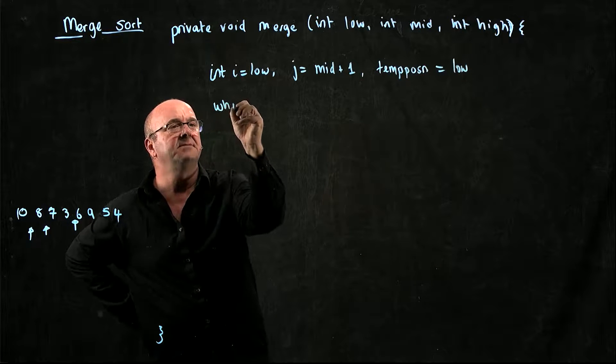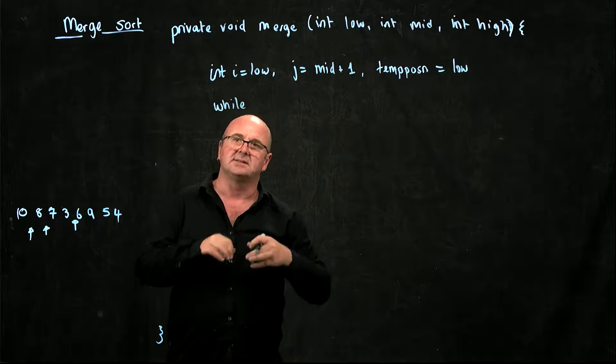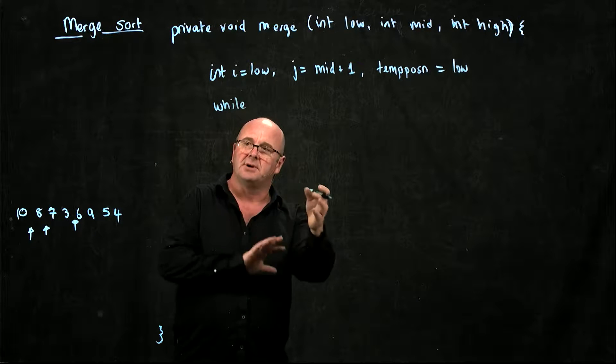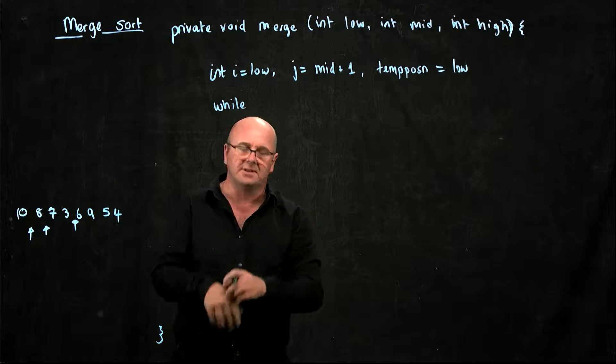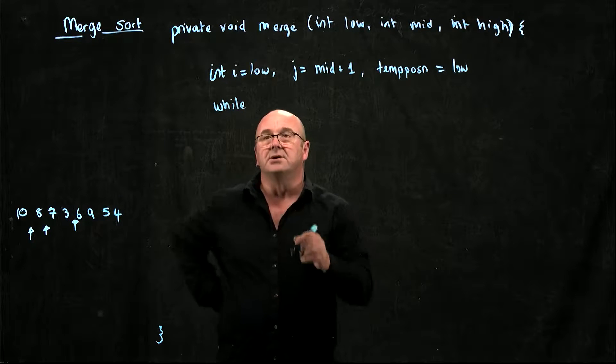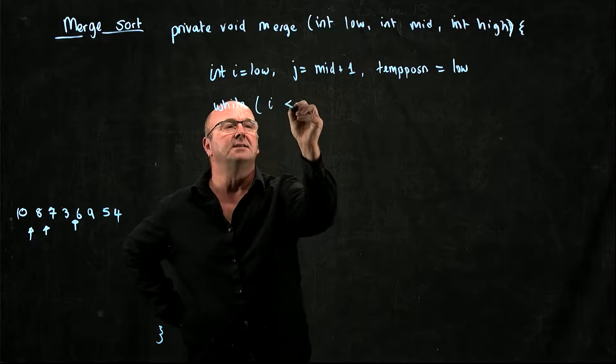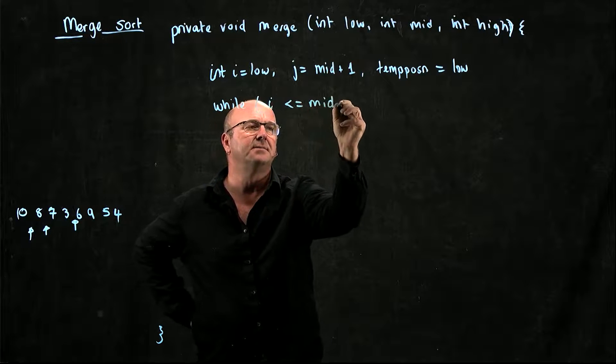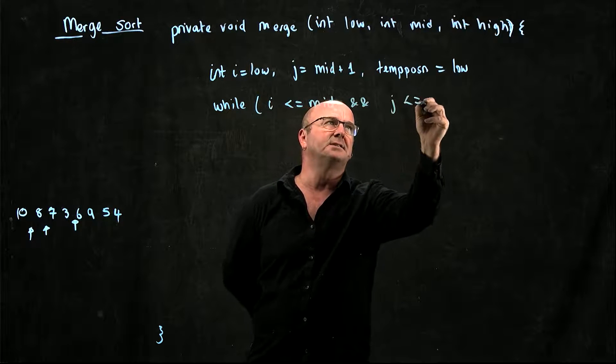So the first thing we need to do is find out which is the smaller of the two things. Is i smaller than j, or the variable at array position i smaller than the variable at array position j? So let's iterate through while i is less than or equal to mid and j is less than or equal to high.